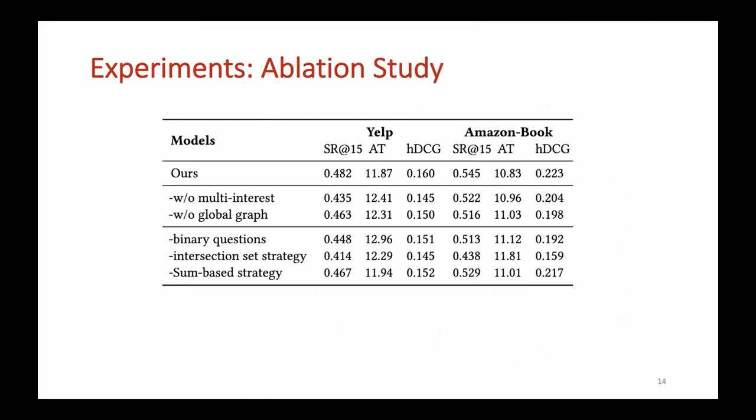We evaluate the effectiveness of different modules. Line 3 shows the impact of iterative multi-interest extractor, and Line 4 shows the impact of global graph representation. We also conduct some experiments to study the effectiveness of strategy. Line 5 shows the impact of multiple-choice questions, and Line 6 shows the impact of union set strategy. Line 7 shows the different performances of different strategies to select attribute instances.